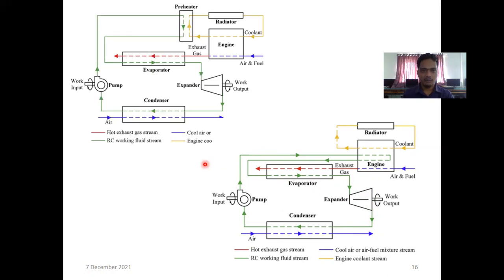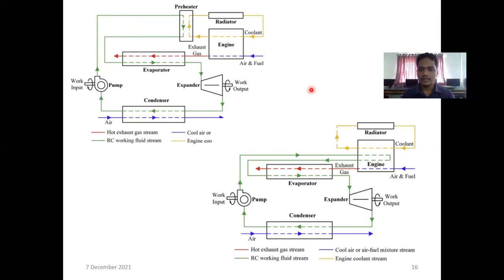One more case: air and fuel mixture is input to the engine, and exhaust gases emit a large amount of heat. In other cases we keep the radiator as a separate part, but here we also connect the radiator, which contains some amount of heat that can be used to preheat the incoming pump flow. This can also reduce the pump work. This is one kind of arrangement.